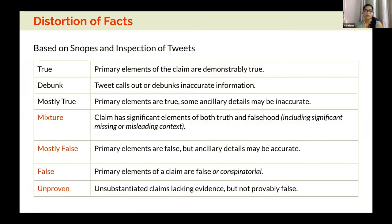We first needed to capture different types of distortion. We inspected tweets and the categorizations available from fact-checking experts, and came up with seven categories general enough to apply to any new domain but nuanced enough to capture different levels of distortion. True, debunked, and mostly true are generally reliable facts. Mixture has significant elements of truth and falsehood, and may contain missing or misleading context. Mostly false, conspiratorial, and false or unproven information are considered misinformation.